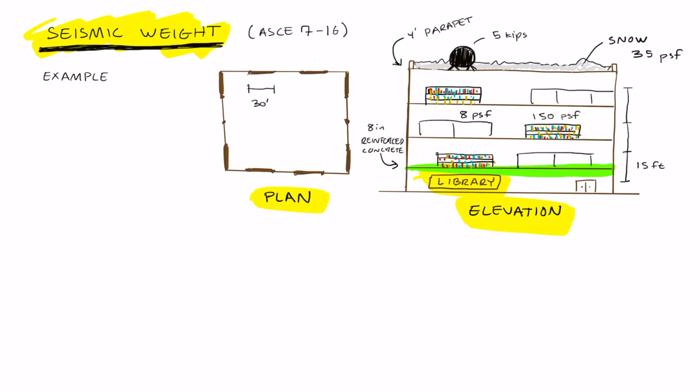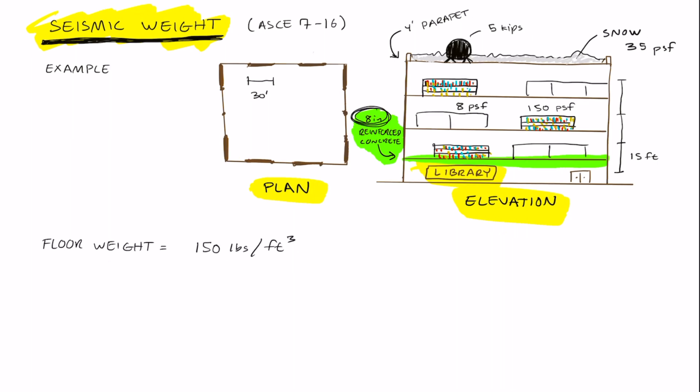The first thing we'll have to do is find the weight of the 8-inch reinforced concrete floor. We could look up the density for reinforced concrete in the steel construction manual, and the density is 150 pounds per cubic foot. Since our slab is only 8 inches thick, we could times 8 inches by 1 over 12. We could then multiply it by the density and cancel out the units we don't need. And now we have the weight per square foot, which is 100 pounds per square foot.